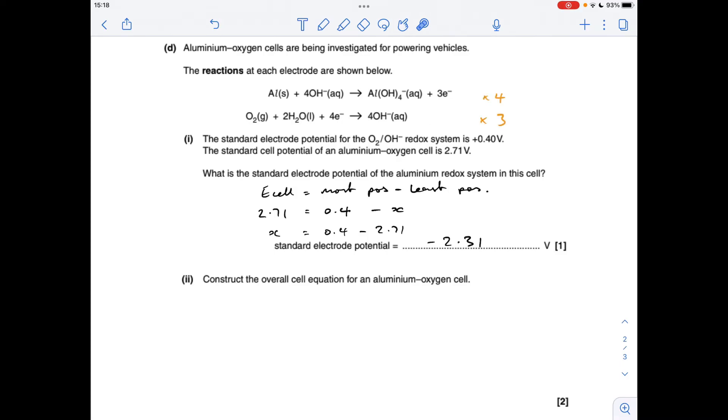The final part, we've got to construct the overall cell equation for the cell. Notice I've written up here, this one times 4 and this one times 3, and that's because of the electrons. We've got 3 electrons in this one, so if we multiply by 4, we'll get them to 12. Likewise, if we multiply this one by 3, electrons will get to 12. And then when we add the two half equations together, electrons will disappear and we'll be left with our overall equation.